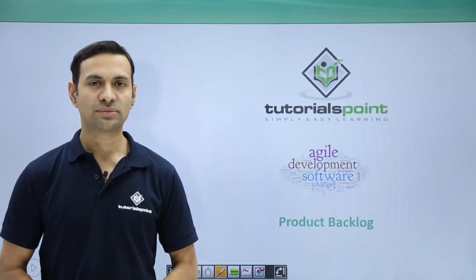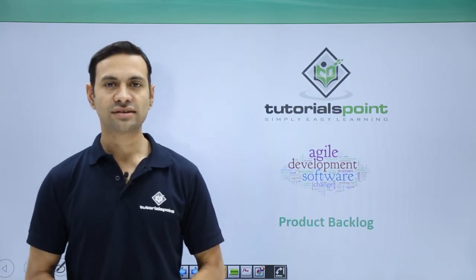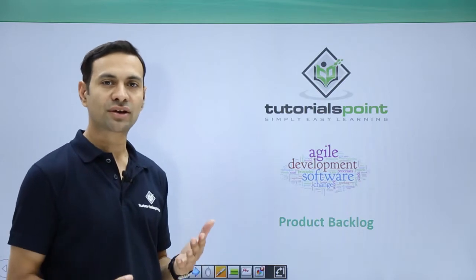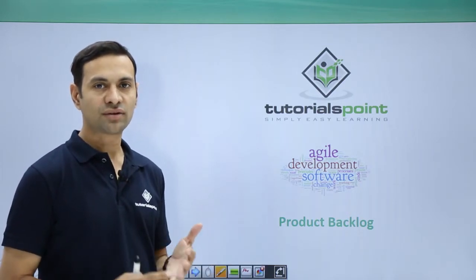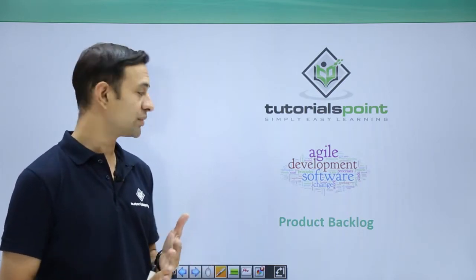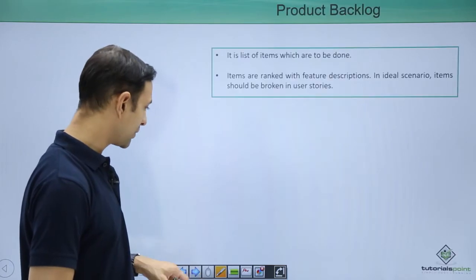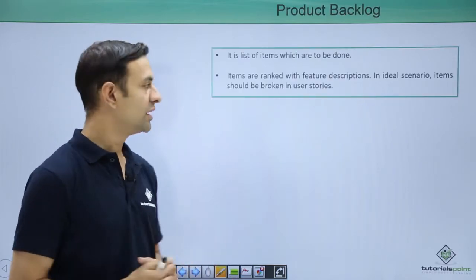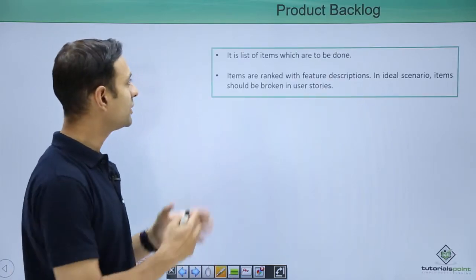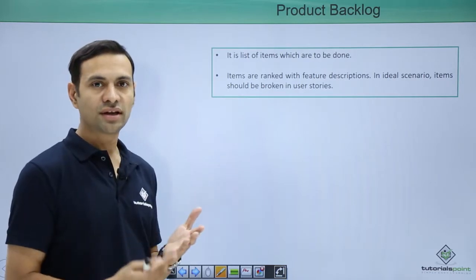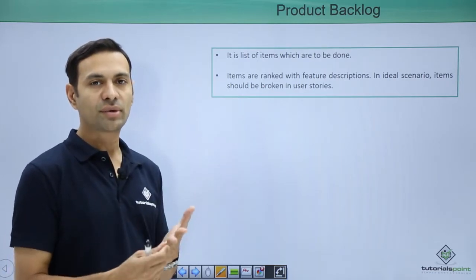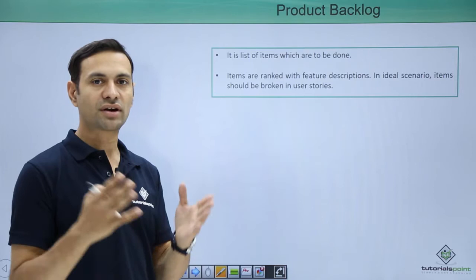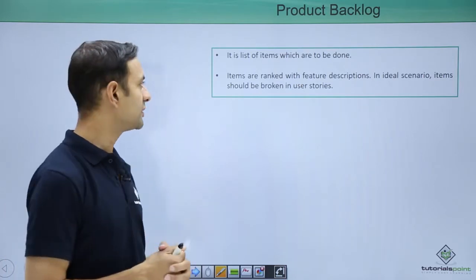Hello friends, welcome to Tutorials Point. In this session I am going to cover product backlog — what it is, why it is required, what importance is given to it, and how to use it. Product backlog is a list of items which are to be done: list of requirements, list of features, list of user stories which are to be covered during our agile software development.